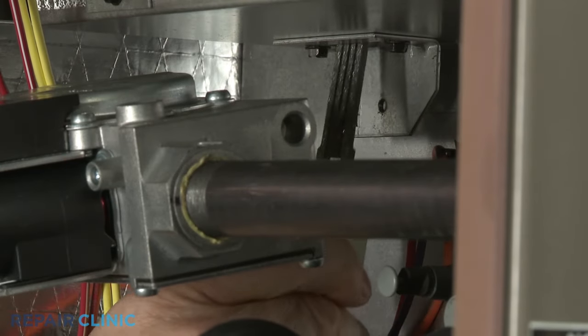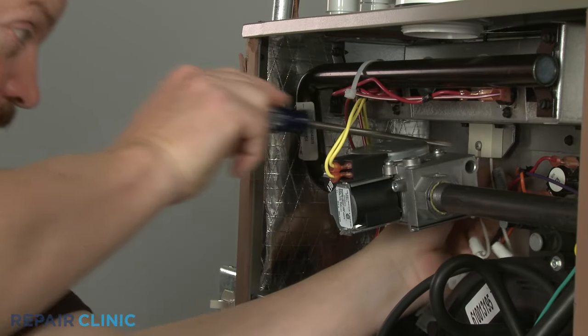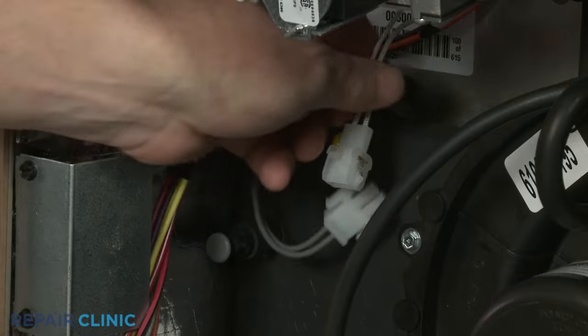You can now install the igniter by inserting it into the burner housing, securing it with the mounting screw, and connecting the wire connector.